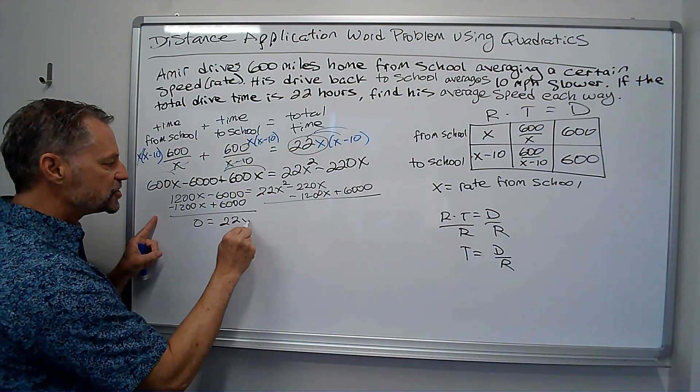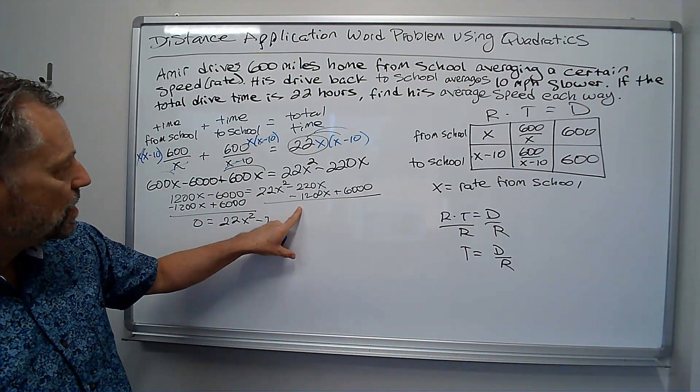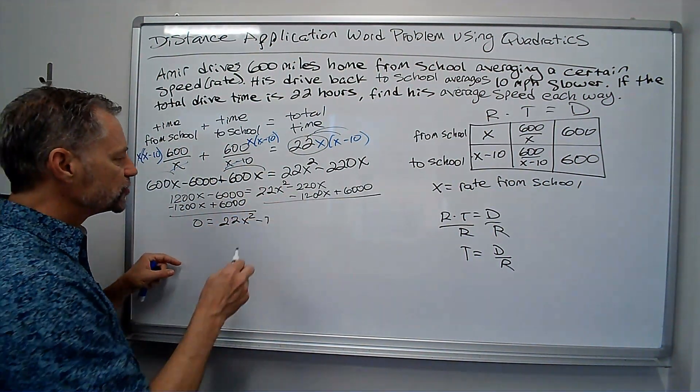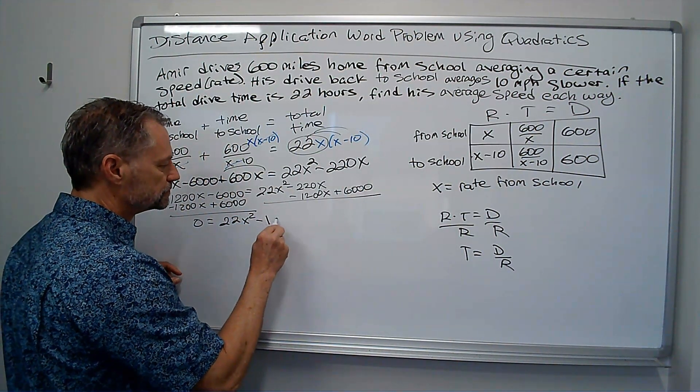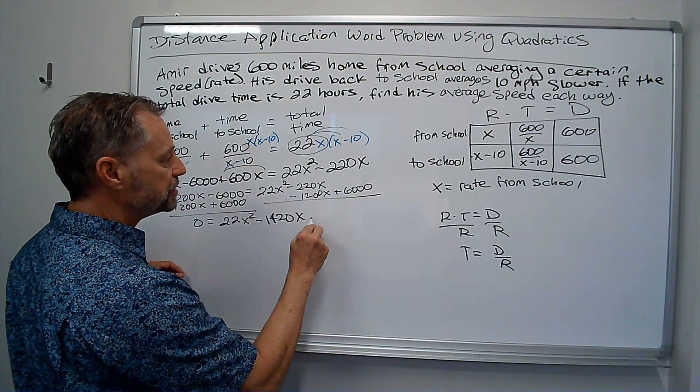So, I need to get it equal to zero, so I'll subtract the 1,200X, add the 6,000.